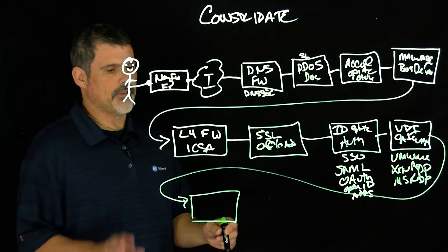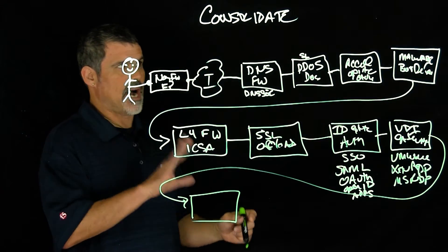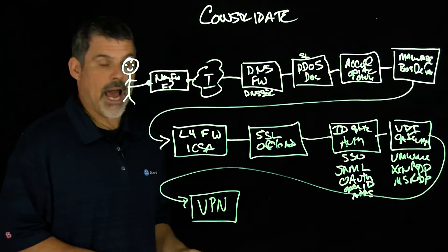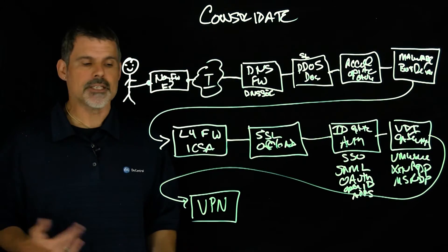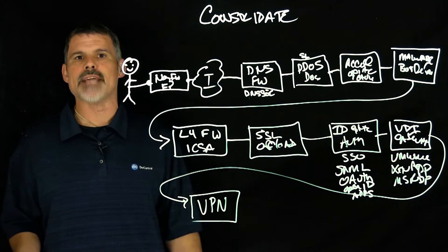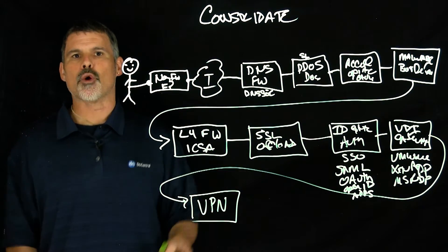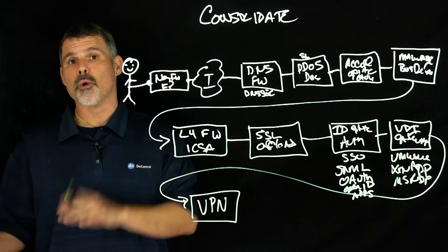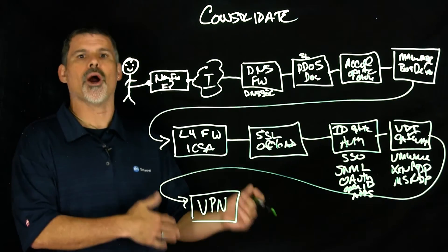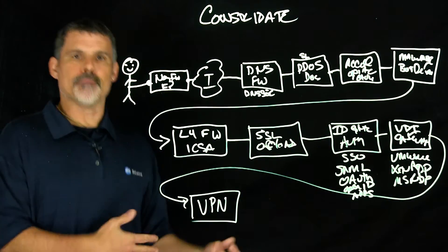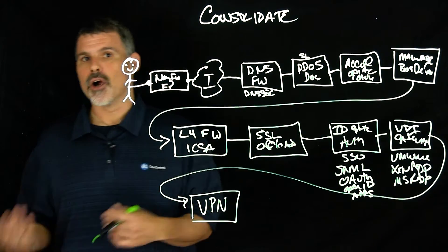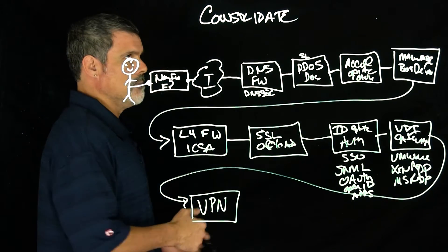Along with the VDI proxy would be a VPN. BIG-IP Access Policy Manager is an SSL VPN, enabling encrypted tunnels between your remote employees and your corporate network. It's encrypted, optimized, and secure — a VPN right there on BIG-IP.